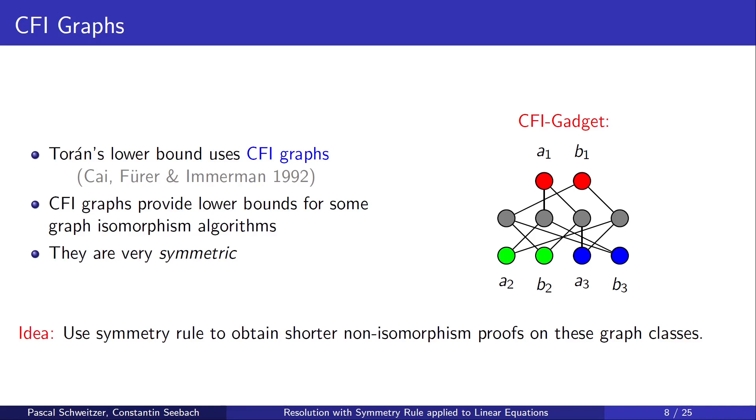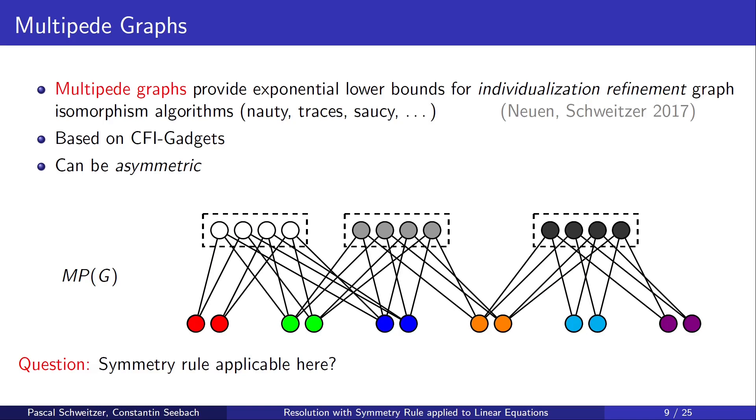Toran's resolution lower bound used CFI graphs. CFI graphs are made from these gadgets here on the right. And they also provide lower bounds for some graph isomorphism algorithms. They are, however, quite symmetric. So, we have the idea to use the symmetry rule to obtain shorter non-isomorphism proofs on these graph classes. Another interesting graph class are the multipede graphs. They provide exponential lower bounds for individualization refinement graph isomorphism algorithms. These algorithms are used in practice in tools like Nauty, Traces and so on. They are also based on the CFI gadgets. However, they can be asymmetric. So, the question is, can the symmetry rule still be applied here?